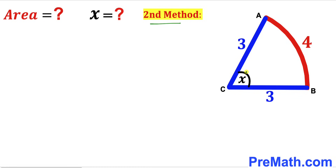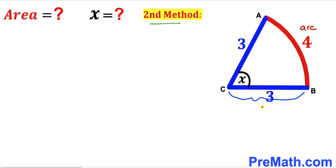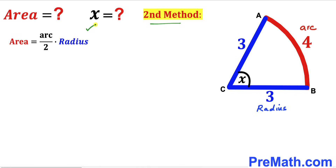Now for the second method — we don't need to calculate angle x first. Our arc length is 4 and our radius BC is 3 units. We use a simple formula: the area of the sector equals arc length divided by 2, times the radius.